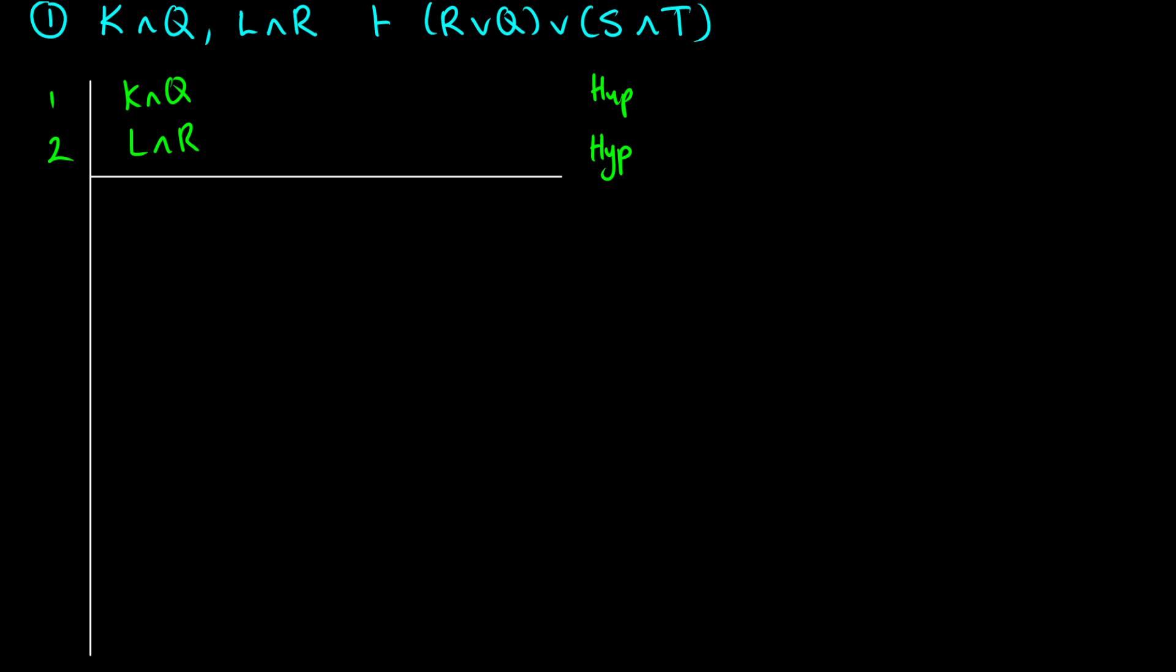So what I'm going to do is in line three, I'm going to use and elimination to get R. So this happens from line two, and I use and elimination. Since we know L is true, we know R is true. Therefore, we can get R being true.